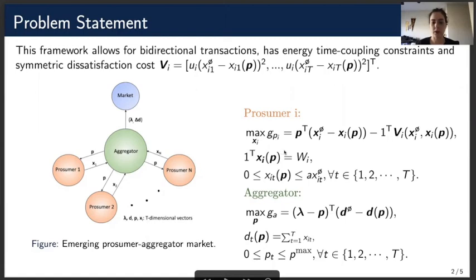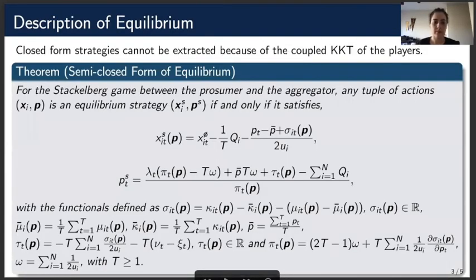The sum of the demand that the customer has to be equal to W_i, a parameter that the customer chooses. Any demand at any time t from 1 to capital T, which is 24 for 24 hours, should not be negative but also should not be greater than alpha times the original scheduled demand for that hour. Alpha is greater than one and allows for the consumer to purchase extra energy as compared to the originally scheduled one, and that is the flexibility of this framework. The aggregator, on the other hand, is making profit from the price difference to the price at which he submits to the market and the price at which he will buy or sell energy from the consumer times the total energy traded with the prosumers. The price P_t has to be positive and is bounded by some P maximum. The problem here is that the equilibrium cannot be found in closed form. After applying the KKT conditions to all the players, the KKT conditions are basically coupled, and we can only find a semi-closed form for the best strategies of the players.